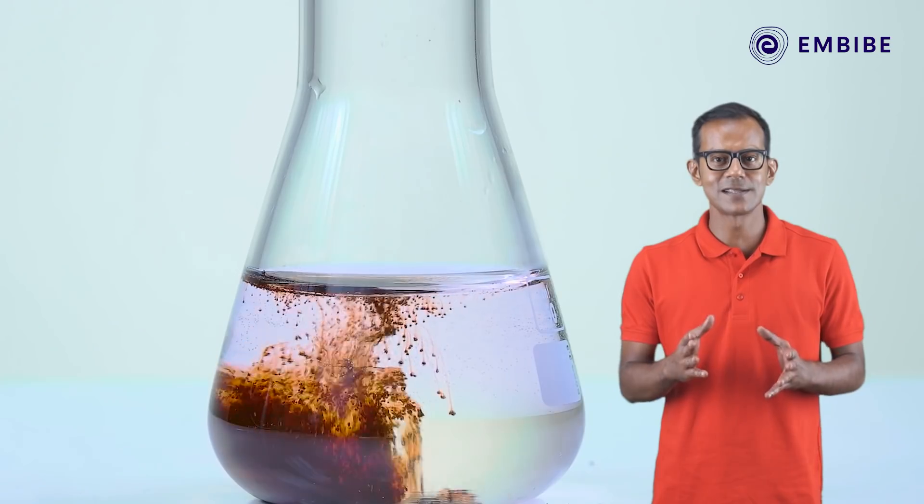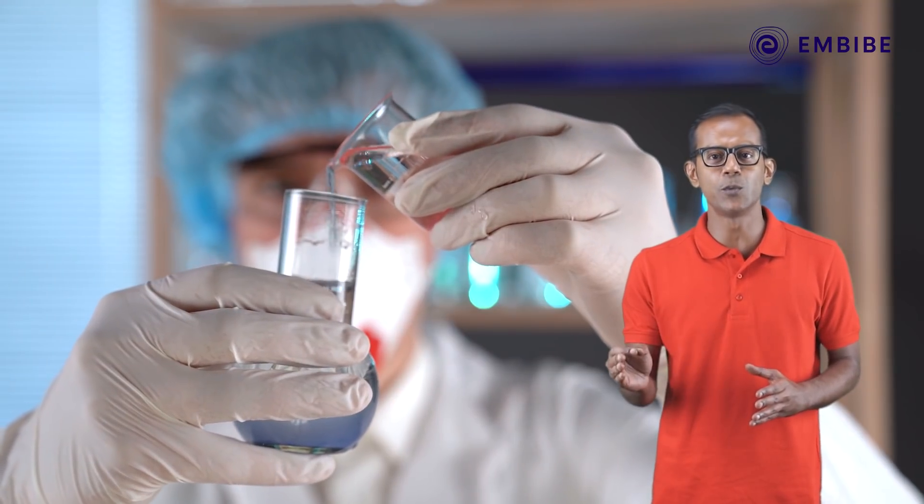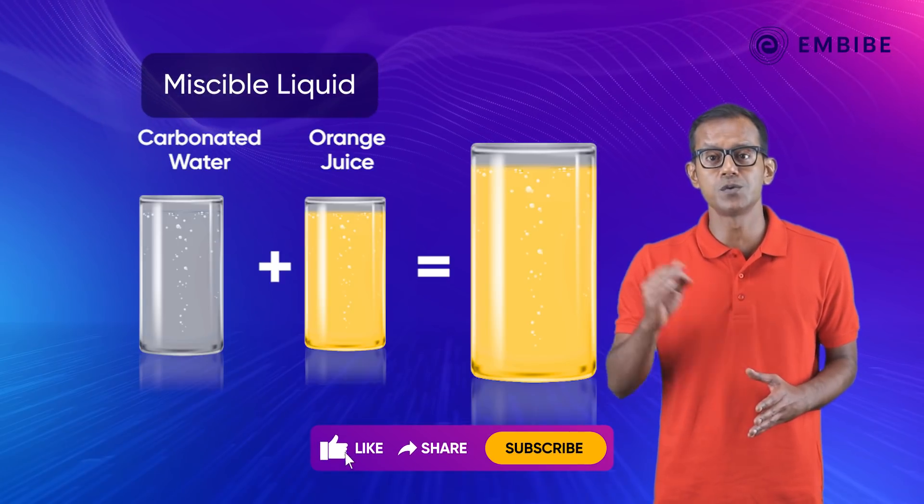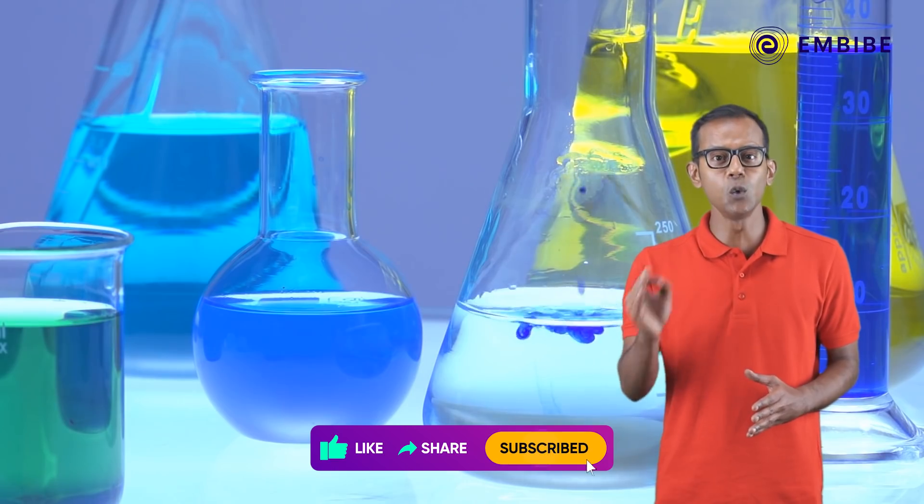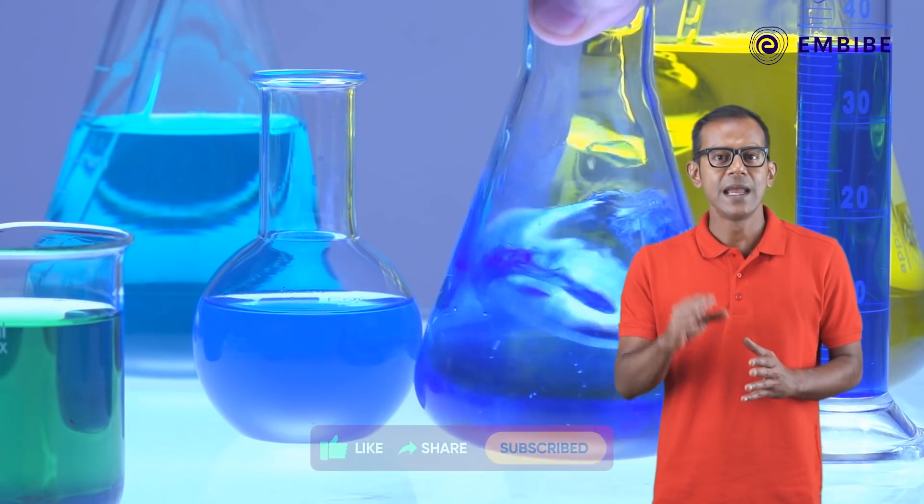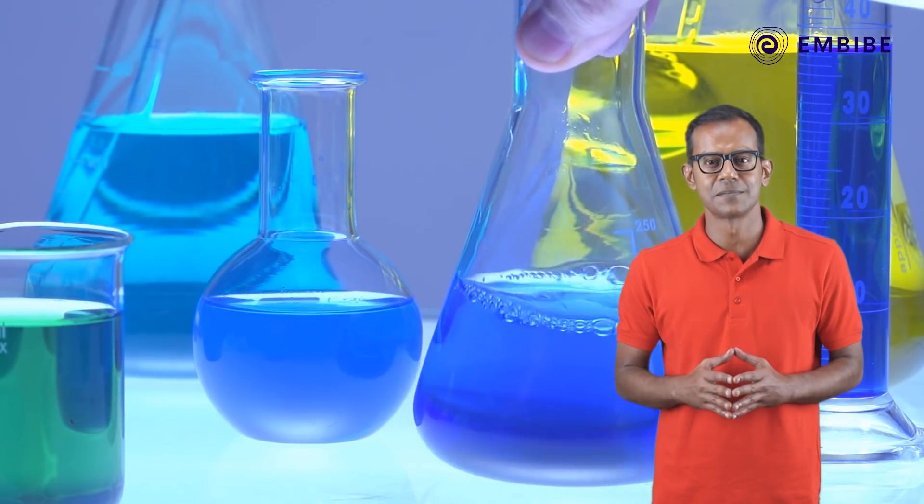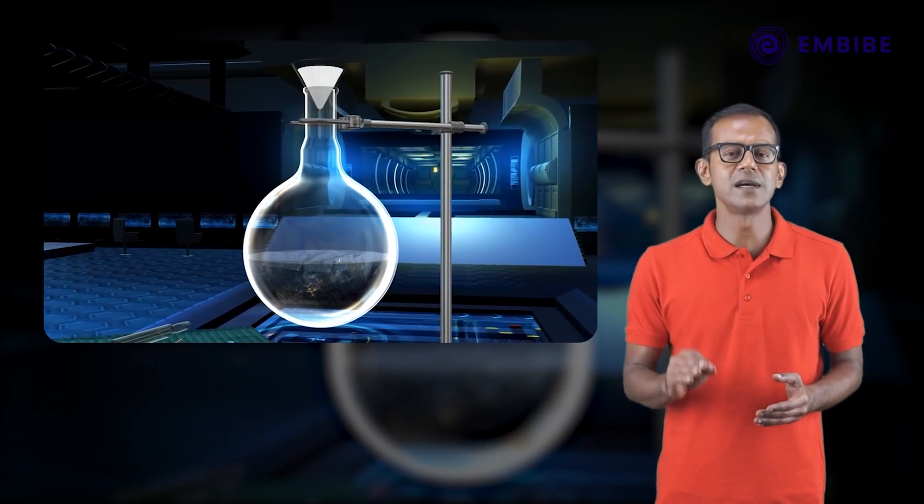Separating immiscible liquids is very easy—just let the mixture settle down and take out the two liquids one by one. But what would you do if you need to separate two miscible liquids? Since the two liquids are mixed up, it is not going to be as simple as the previous case. Today we shall study simple distillation, a method to separate a mixture of two miscible liquids.